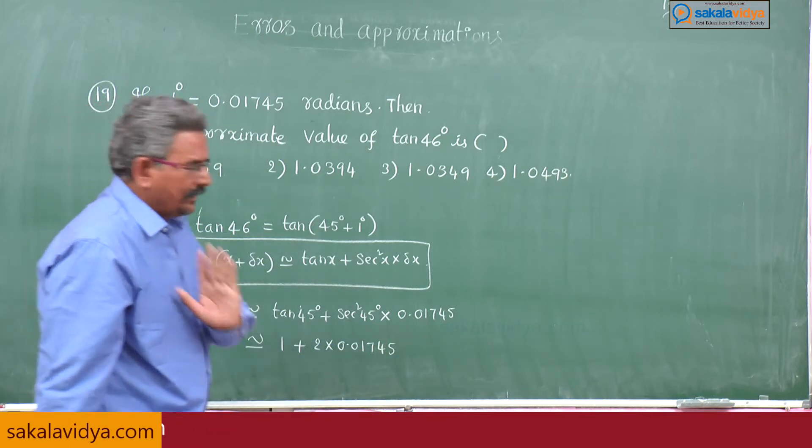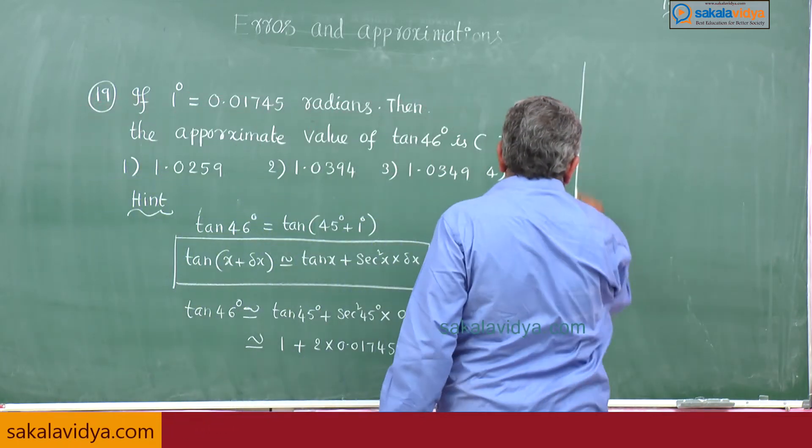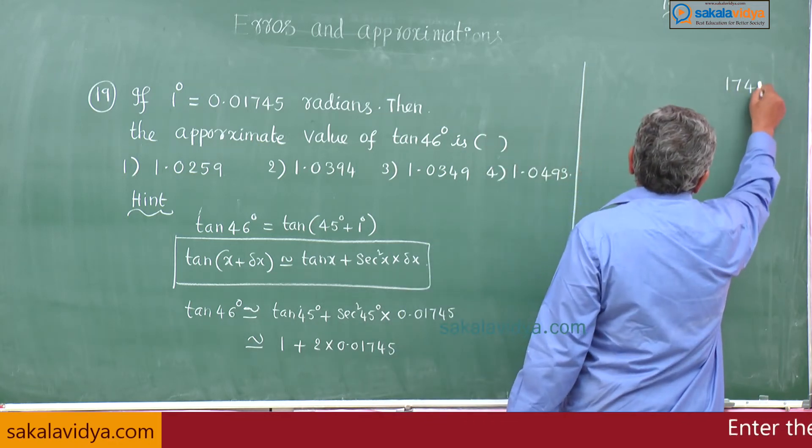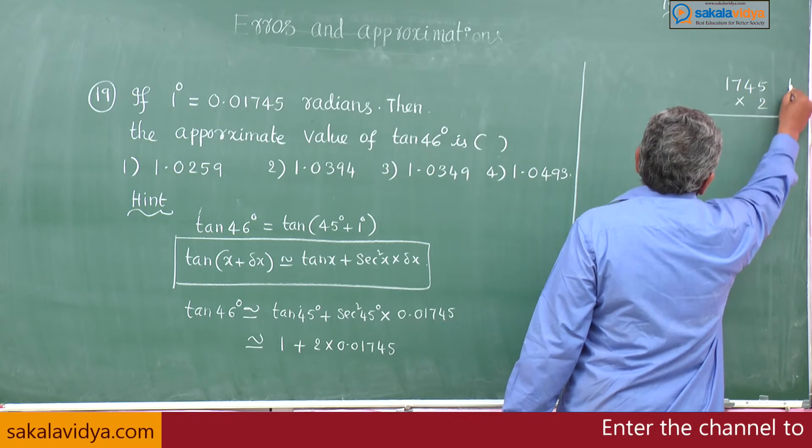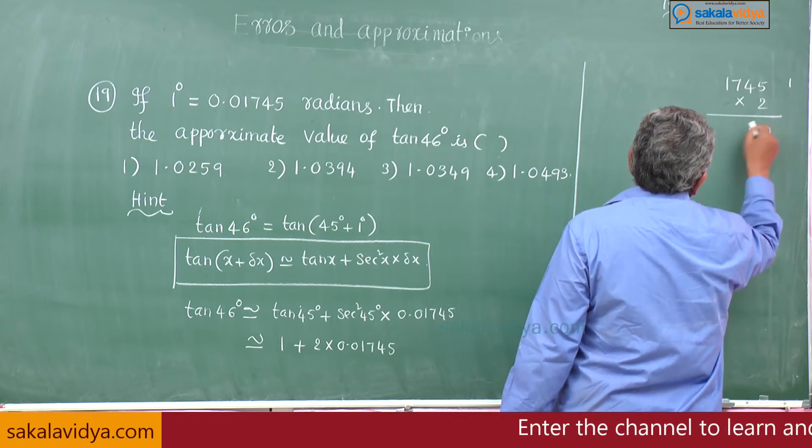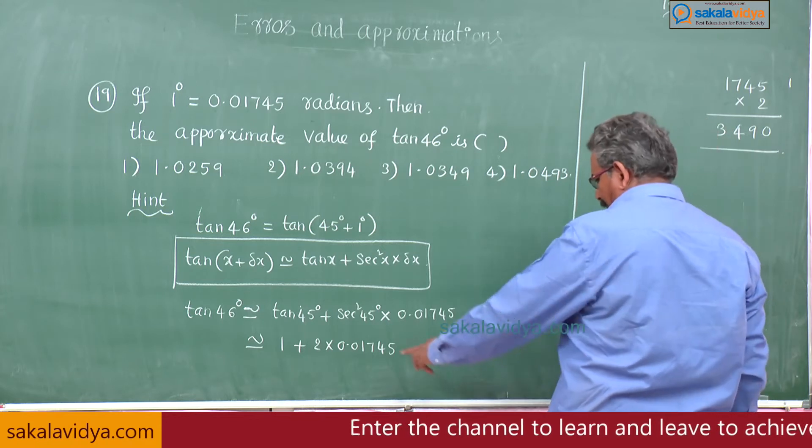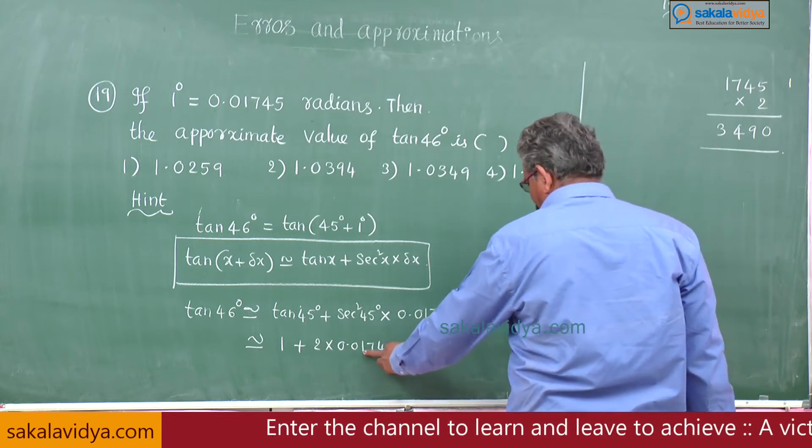Let us calculate it: 1745 multiplied by 2 equals 10, 9, 14, 3. How many points? 1, 2, 3, 4, 5 points.